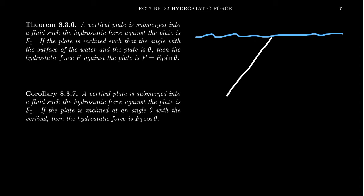How do you determine the hydrostatic force there? Well, it turns out that if you have a vertical plate that's submerged in fluid, such that the hydrostatic force against the plate is, say, F0. If we take our plate and we submerge it vertically, like so, if you take the force exerted against this plate when it's completely vertical, we'll call that F0.